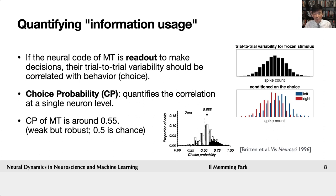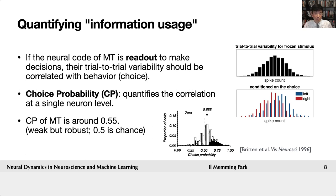CP is basically: if the two histograms are completely separated, the CP is 1 — you can read out the animal's behavior from a single trial spike count. If it's 0.5, it's at chance level. It's well known in MT that single neuron choice probability is around 0.54–0.55, which is a small number close to chance, but it's a significant and robust signal in MT. Our monkeys had choice probability around 0.54, which agrees with prior studies.